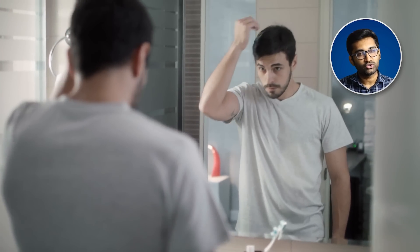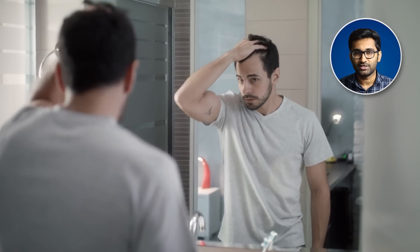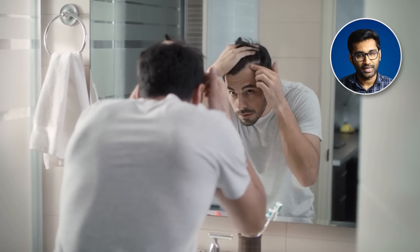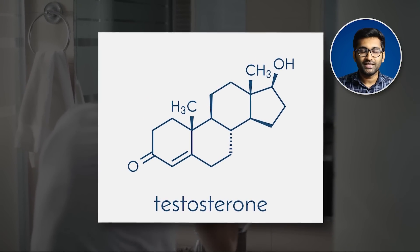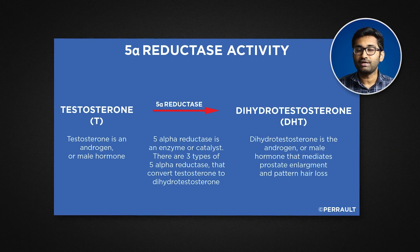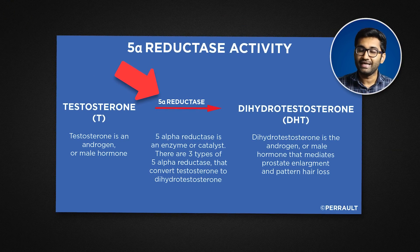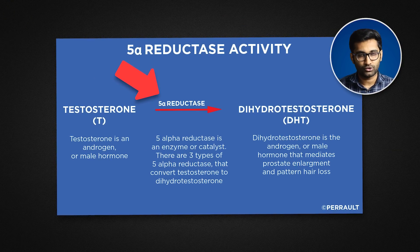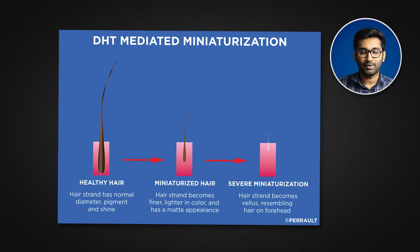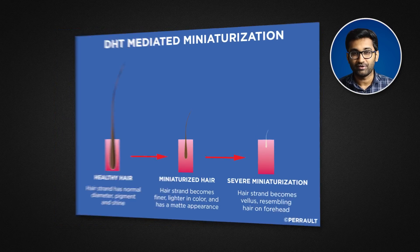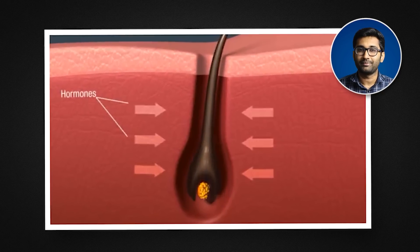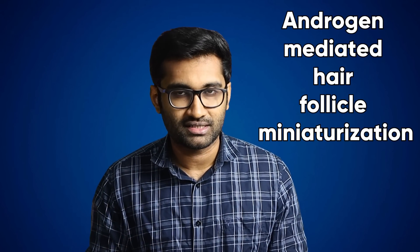Hair loss — that is androgenetic alopecia and male pattern baldness. This is the reason we produce testosterone in our body. In testosterone, there is a 5-alpha-reductase enzyme that converts it to DHT — dihydrotestosterone. This DHT is exposed to hair follicles, causing miniaturization. This is a natural process — androgen-mediated hair follicle miniaturization.